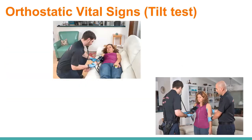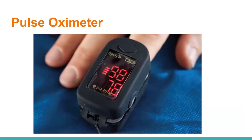Orthostatic vital signs, or the tilt test, should be done if a patient feels weak or you suspect fluid loss. First, lay the patient supine and take their blood pressure and heart rate. Then sit or stand them up — hold on to them — and after two minutes, reassess. If the heart rate increases 10–20 beats per minute and blood pressure decreases by 10–20, that is a positive orthostatic test indicating blood or volume loss. Be careful — hold your patient so they don't fall.